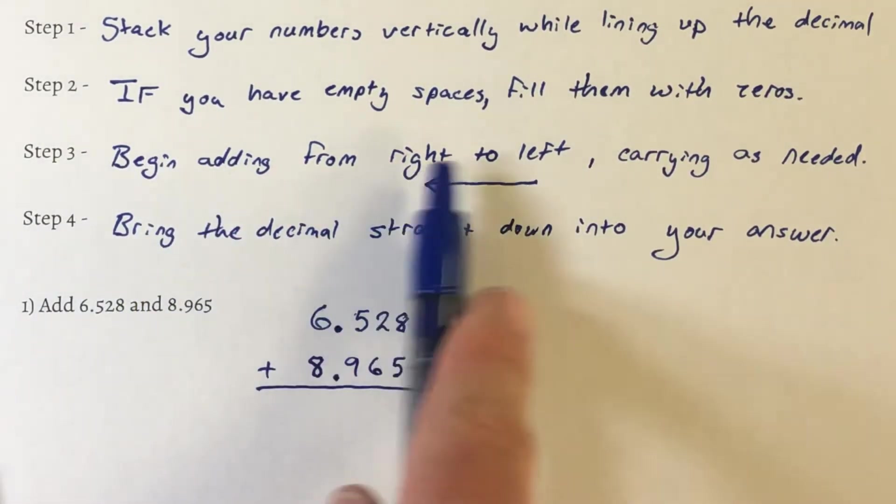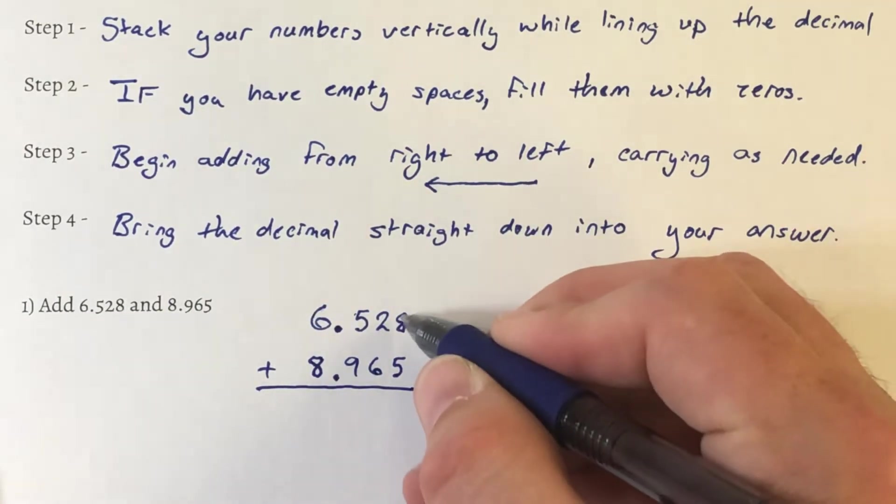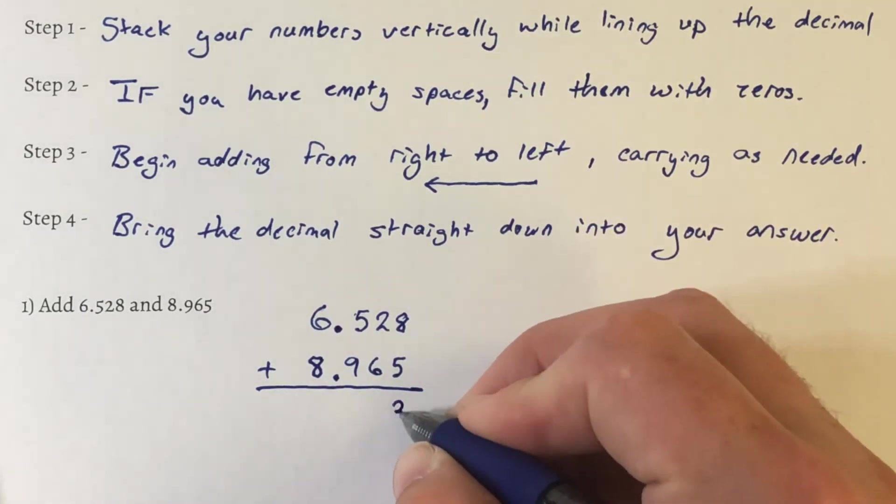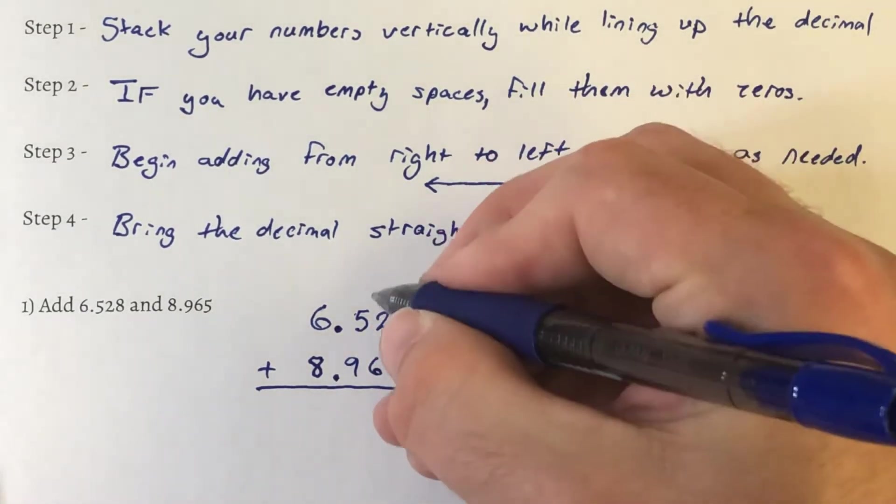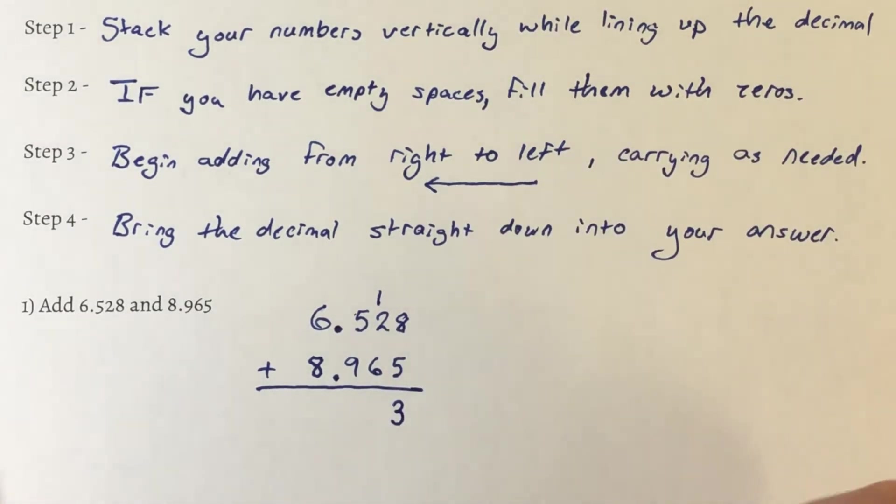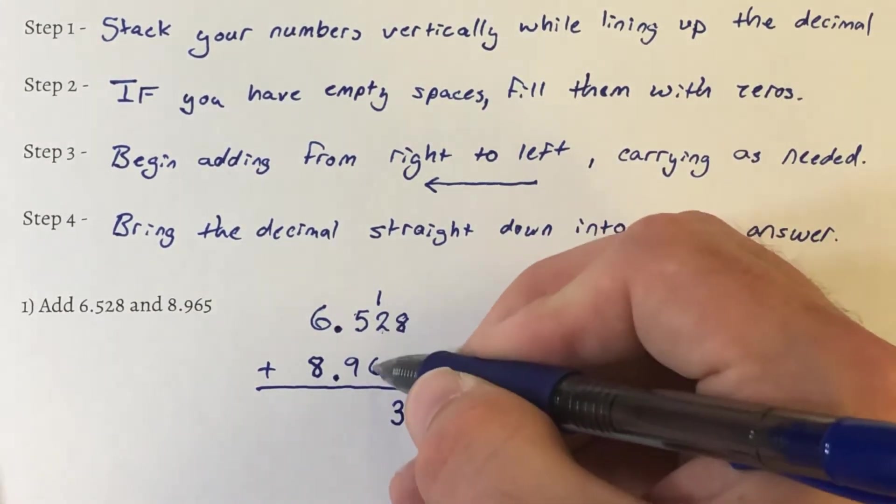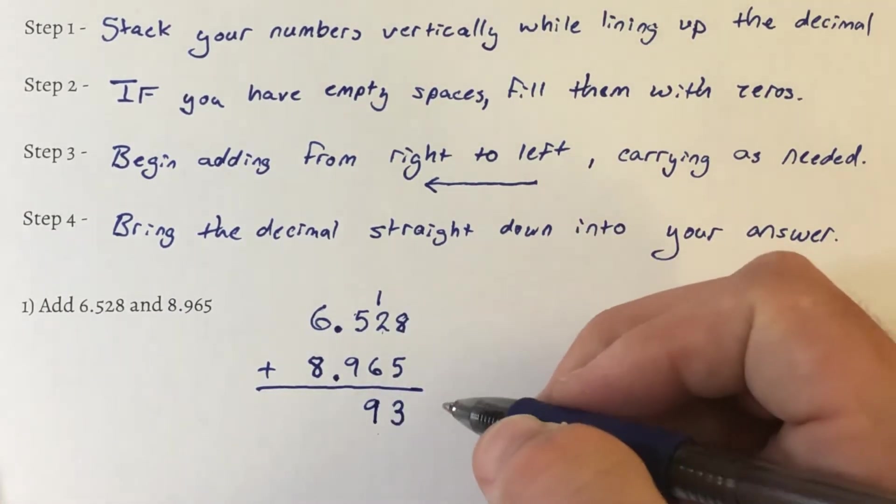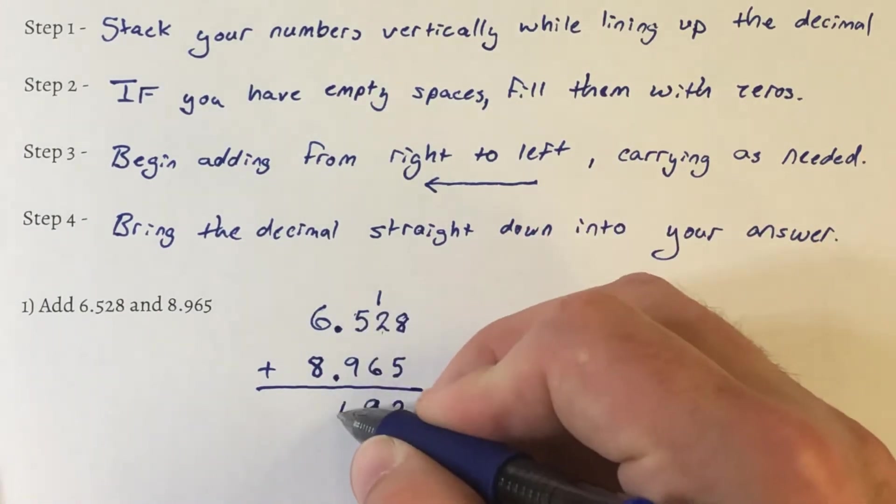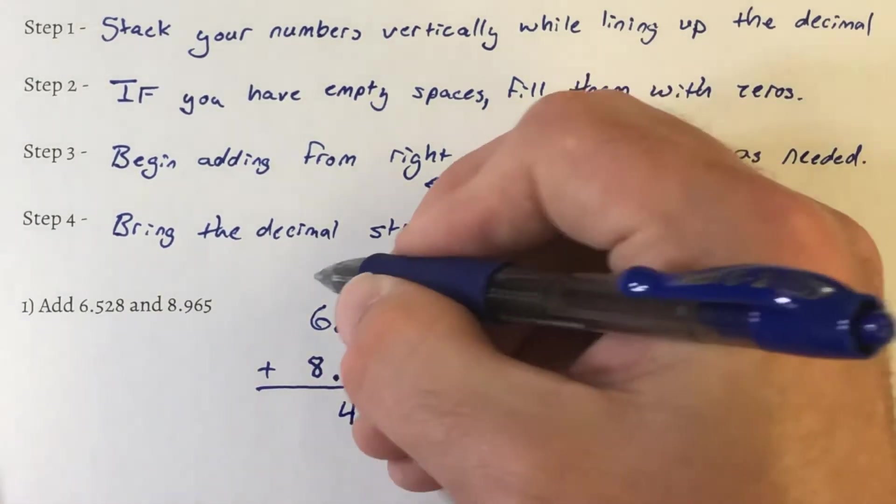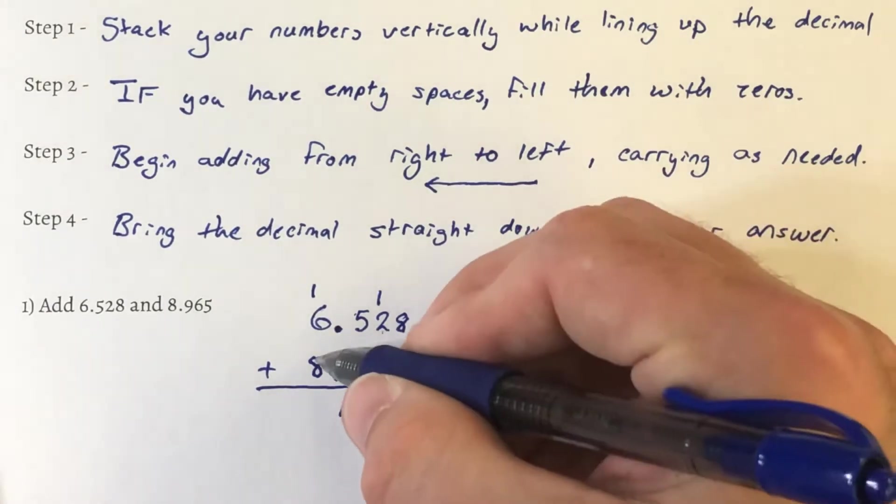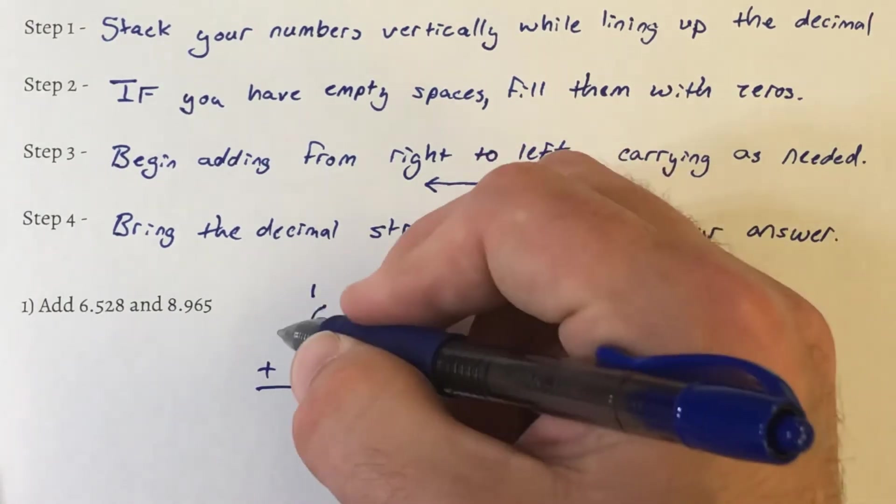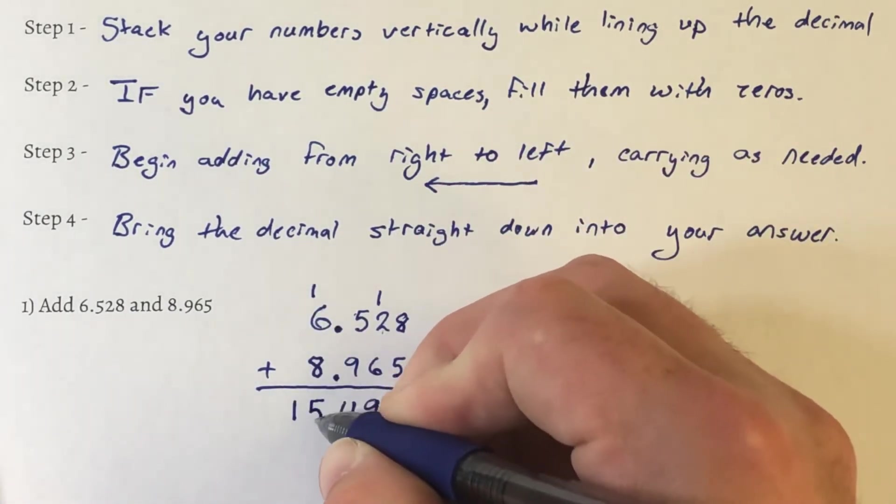Next step, begin adding from the right and work your way left, carrying as needed. So I'm going to start on the right side. 8 plus 5 is 13. So I'm only going to write one digit there, 3, and I'm going to carry my 1 from that 13 and put it in the next column. Now I'll start in this column. 6 plus 2 is 8, plus 1 is 9. No need to carry. Next, 9 plus 5 is 14. So we'll write our 4. We need to carry the 1 into the next column. 8 plus 1 is 9, plus 6 is 15. I don't have any other numbers, so I don't need to carry. I'm simply going to write 15.